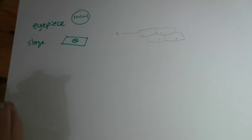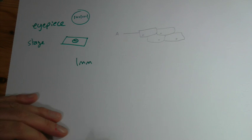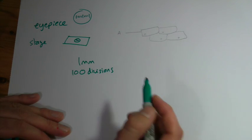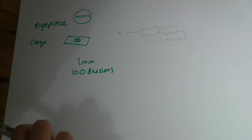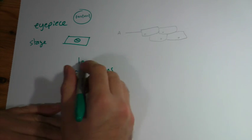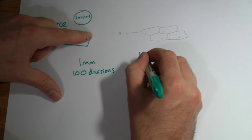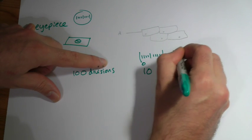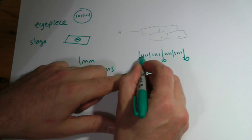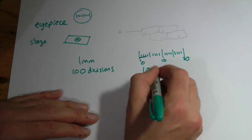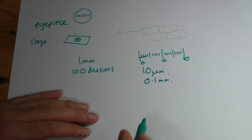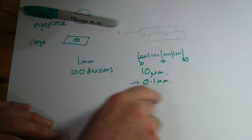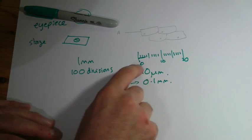Now, most of the ones you're going to come across will be one millimetre long and will generally have a hundred divisions. So when you look at this under a microscope, that little line in reality is one millimetre long and it's divided into a hundred. This makes things a bit awkward because if we're used to working in micrometres, one millimetre divided by a hundred means that each small division is ten micrometres, or nought point one millimetres — that's usually what it says on the graticule. I think it's easier to think of it in terms of micrometres, so keep in mind that each division is ten micrometres.